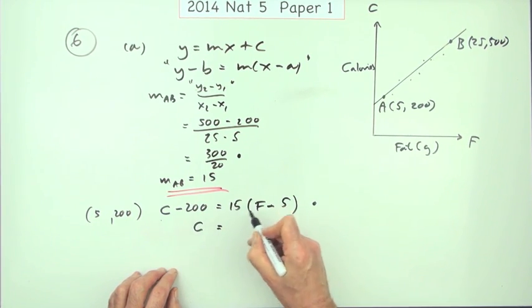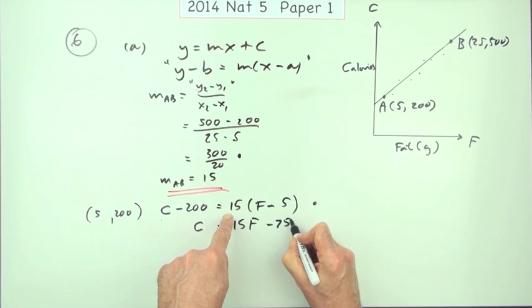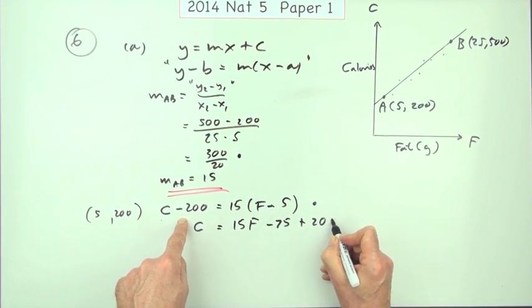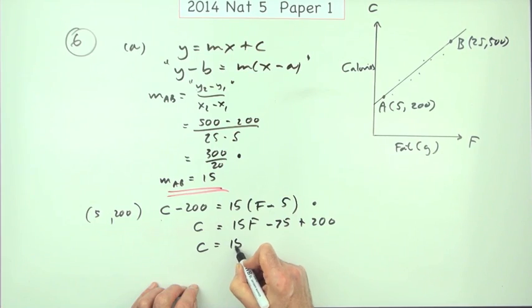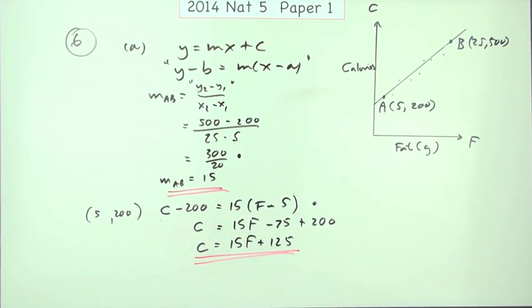So the final answer would be, I've got C equals 15F minus 75 plus, or plus 200. So C would be 15F plus 125. And that's the third mark, and you have to have the C and the F in. And if you wrote, Y equals 15X plus 125, that wouldn't get the last mark. You'd have to change those names to the proper names on the axis.